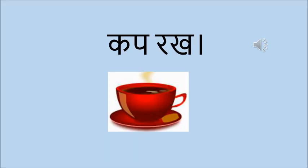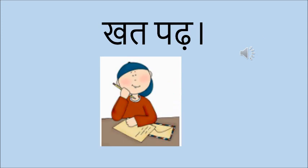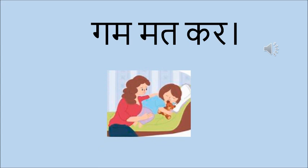The first example is kap rakh. You can see that there is a gap between the two words, and after writing the two words we have put a standing line — that standing line is the purna viram. The next one is khat pad, which means read the letter. Again the same thing: a gap between the two words and a standing line. Gam mat kar means do not be sad. Give a gap between two words and a standing line at the end.